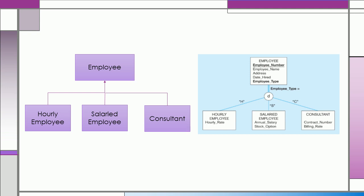For each subtype, we can also create tables like hourly employee, salaried employee, and consultant. And, has the following attributes: for the hourly employee, we have hourly rate. For the salaried employee, we have annual salary and stock option. And, for consultant, we have contract number and billing rate.